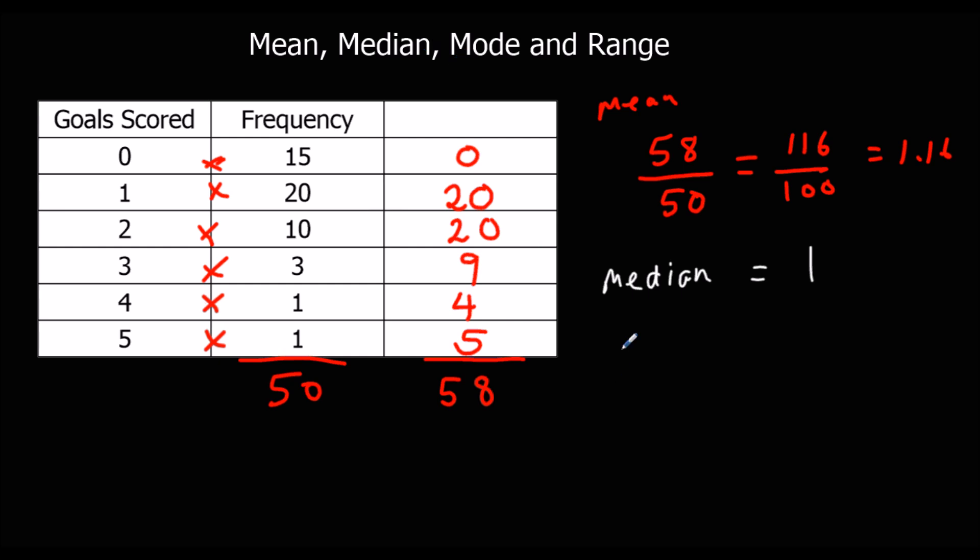The mode, the most common. So there are 15 zeros, there are 20 ones, 10 twos. So the mode, the most common one, is 1.